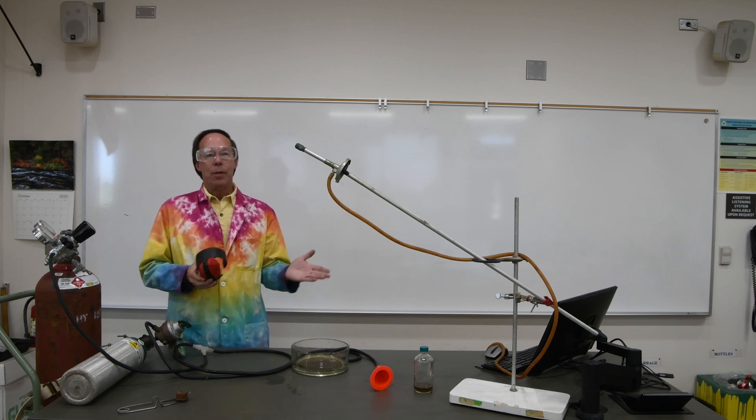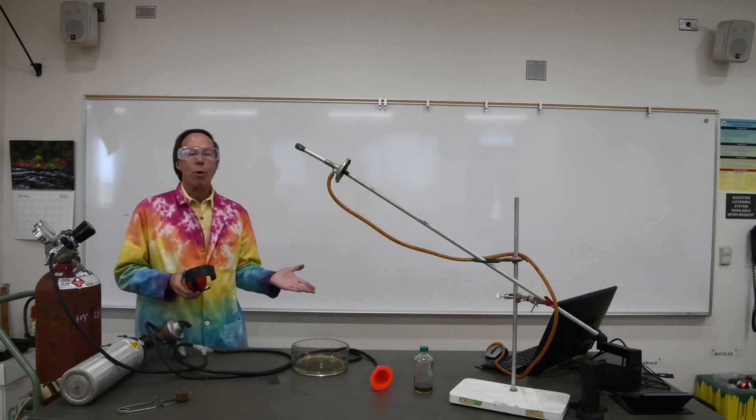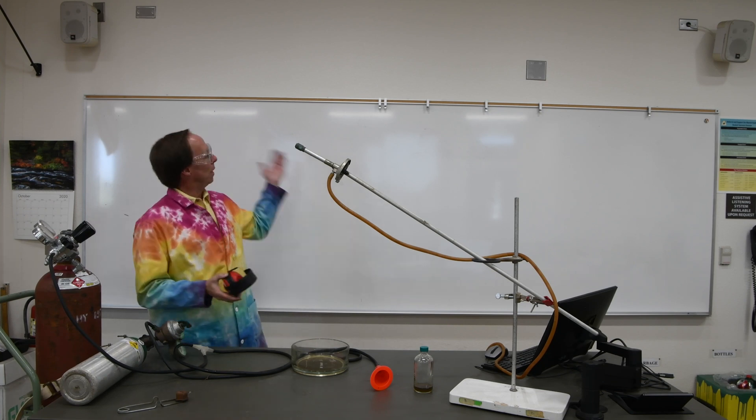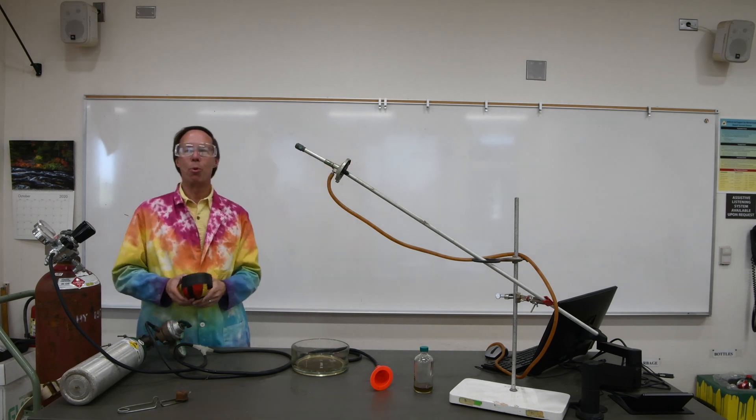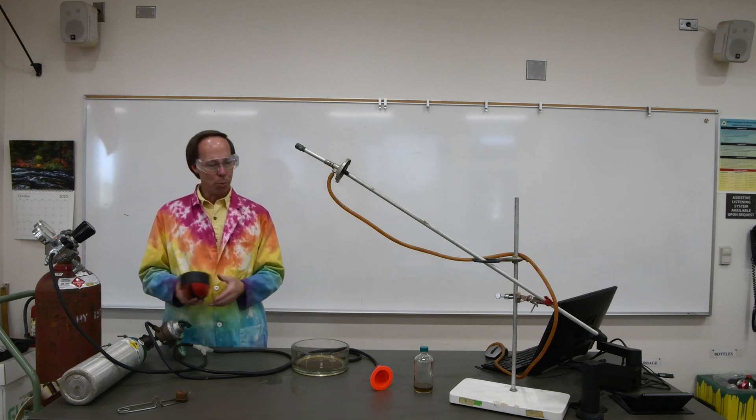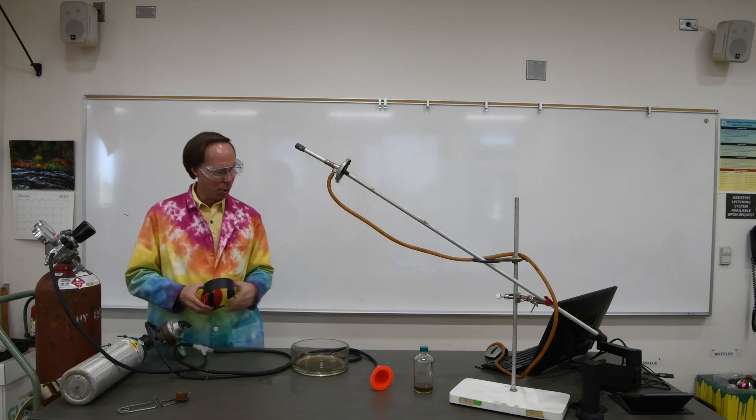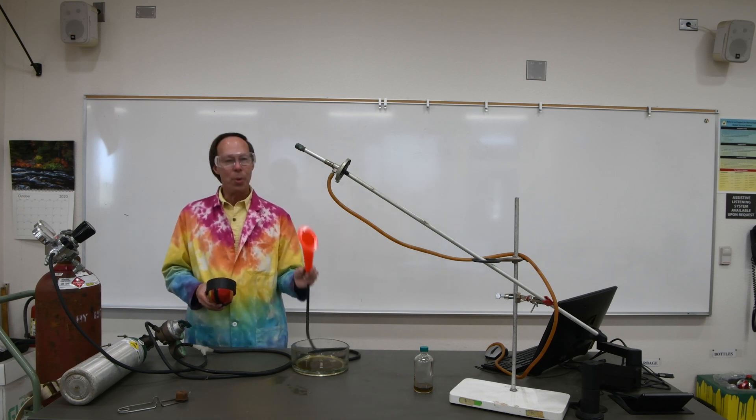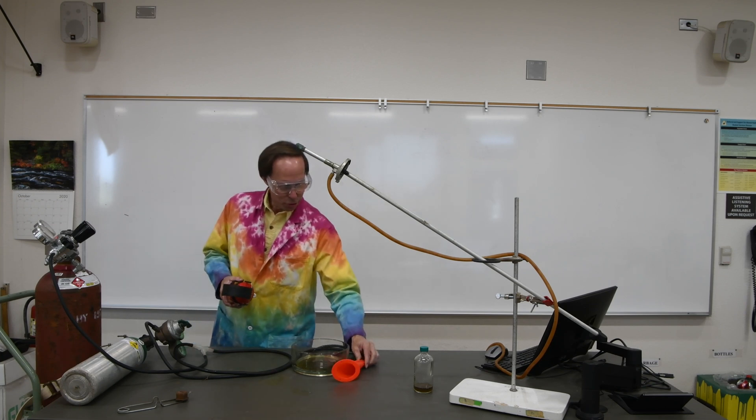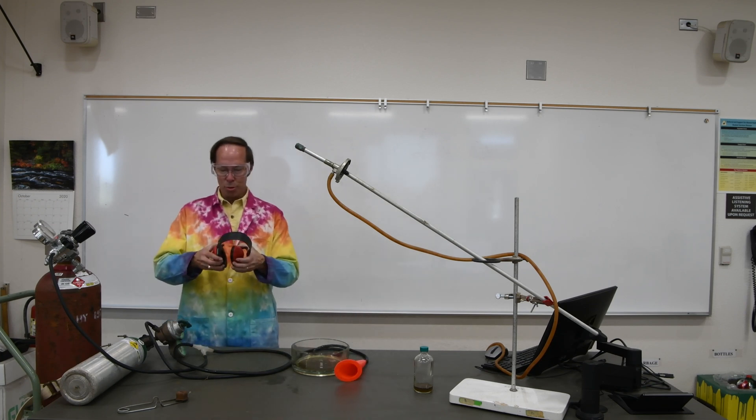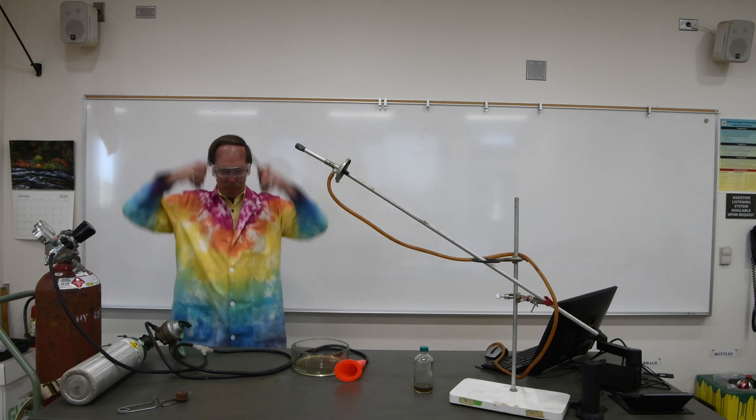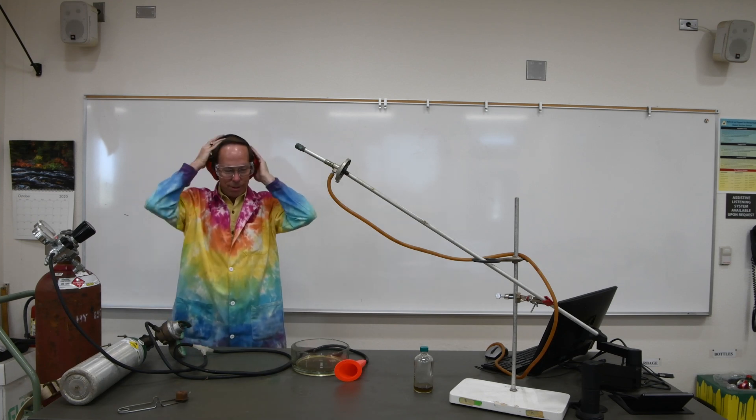So I'm going to be wearing this hearing protection just to be safe here. The ratio of the hydrogen and oxygen, you may remember from back in chapter 4, we had that nice big reaction up on the board. There was 2H2 plus 1O2. We want a two to one ratio. I'm going to try to estimate that ratio by looking at the size of the bubbles. Let's see how good a job I can do.